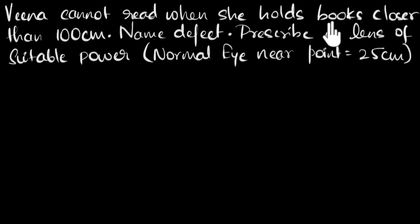Veena cannot read when she holds books closer than 100 centimeters. Name the defect and prescribe a lens of suitable power to correct that defect, given that the normal eye near point is 25 centimeters.